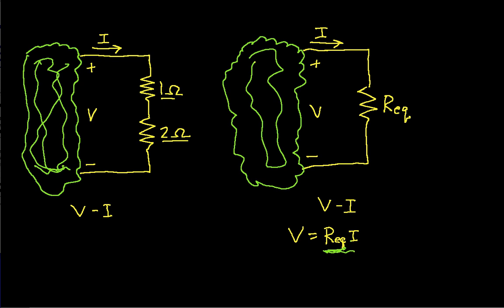So again, just to make it clear, an equivalent resistance is equivalent to two resistors in series if the rest of the circuit can't tell the difference between the two. And the rest of the circuit can tell differences by voltage-current relationships. So if the two voltage-current relationships are the same, then the equivalent resistance and the series combination are the same.